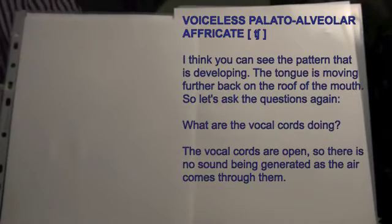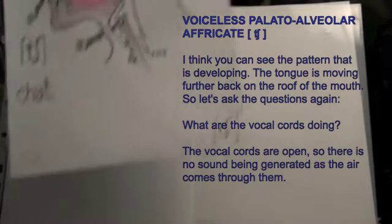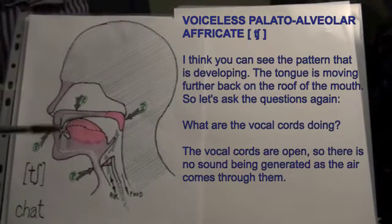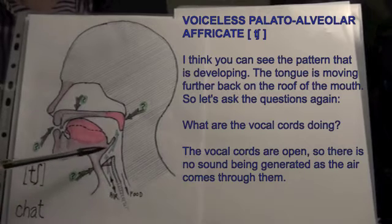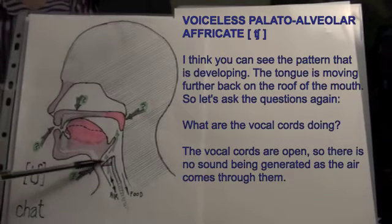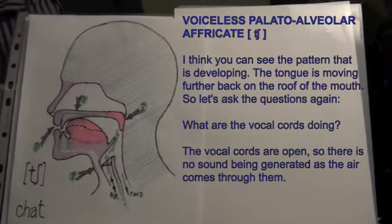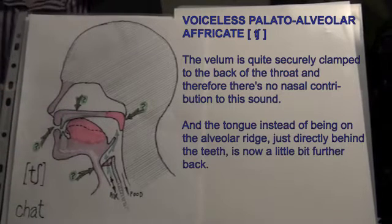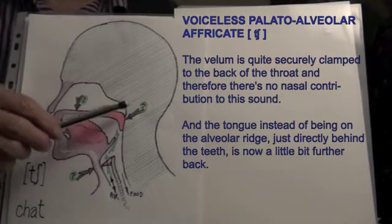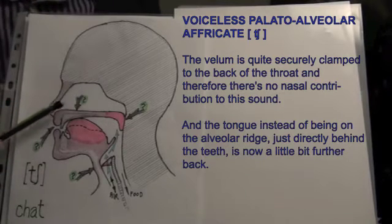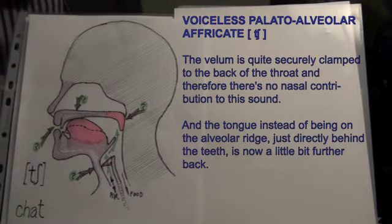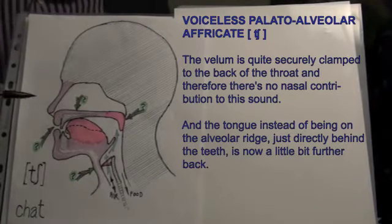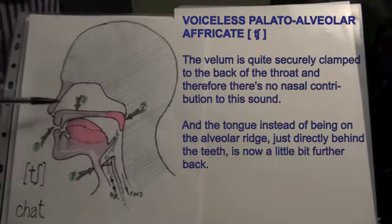You can see the pattern that is developing. The tongue is moving further back on the roof of the mouth. Let's ask the questions again. What are the vocal cords doing? The vocal cords are open, so there is no sound being generated as the air comes through them. The velum is quite securely clamped to the back of the throat, and therefore there is no nasal contribution to this sound. And the tongue, instead of being on the alveolar ridge just directly behind the teeth, is now a little bit further back.